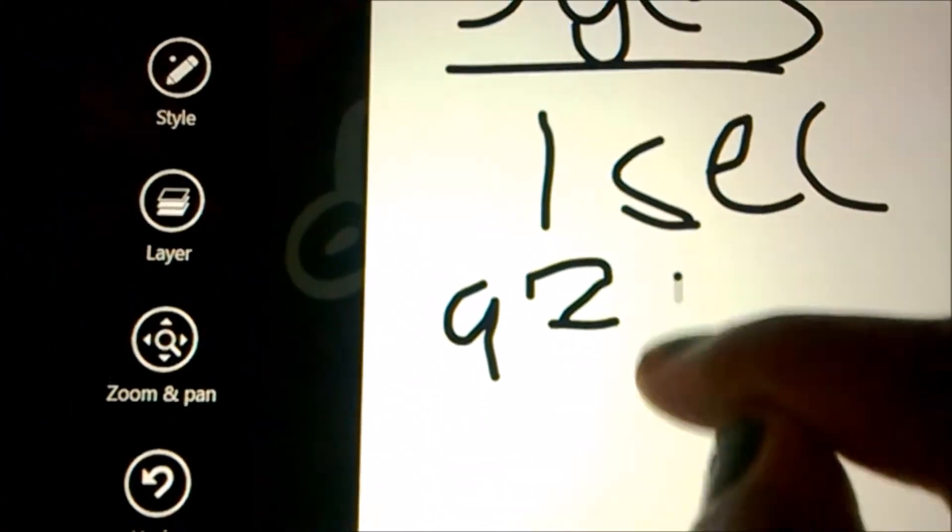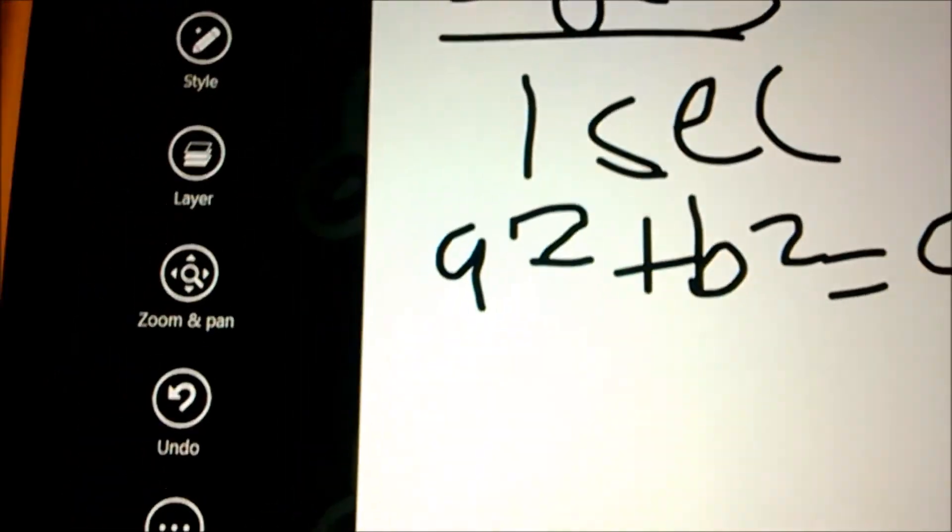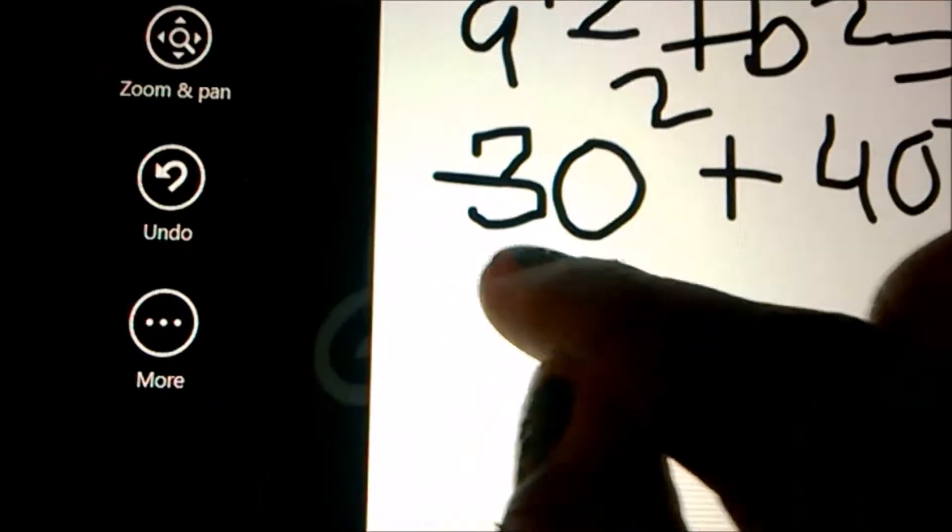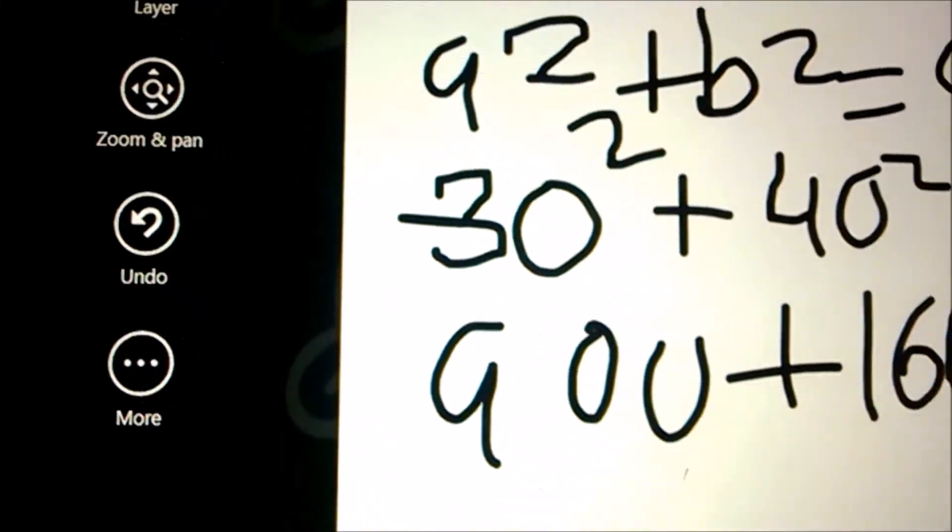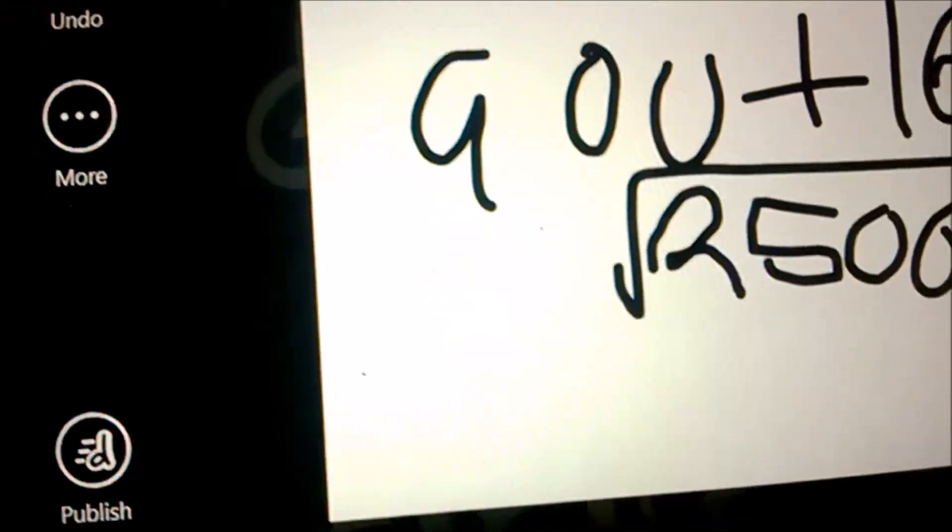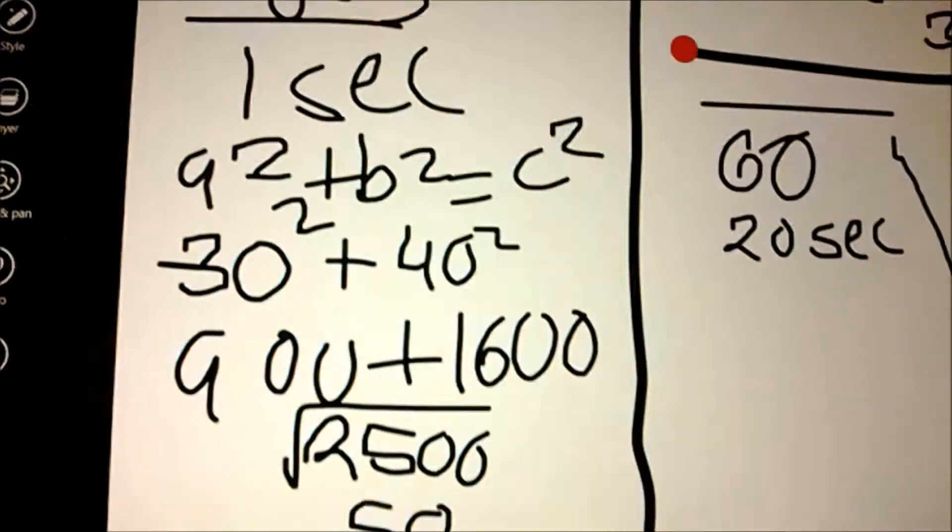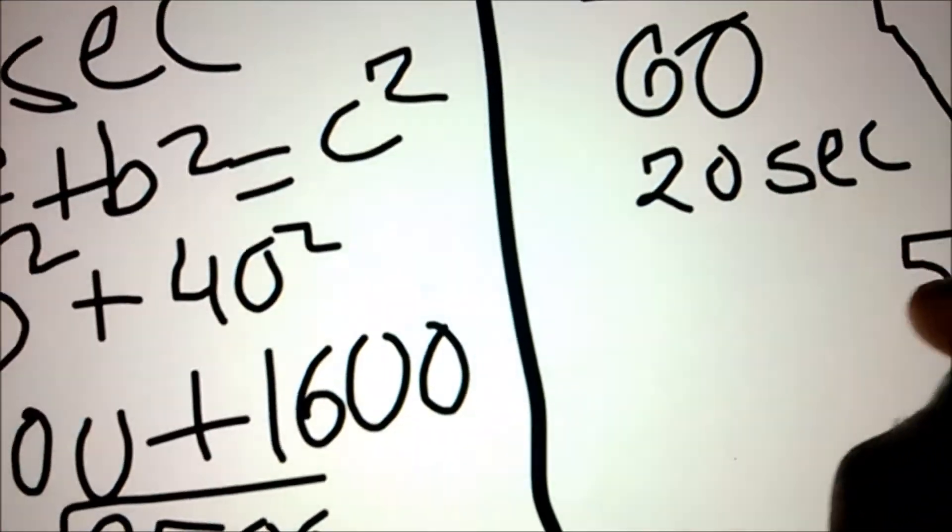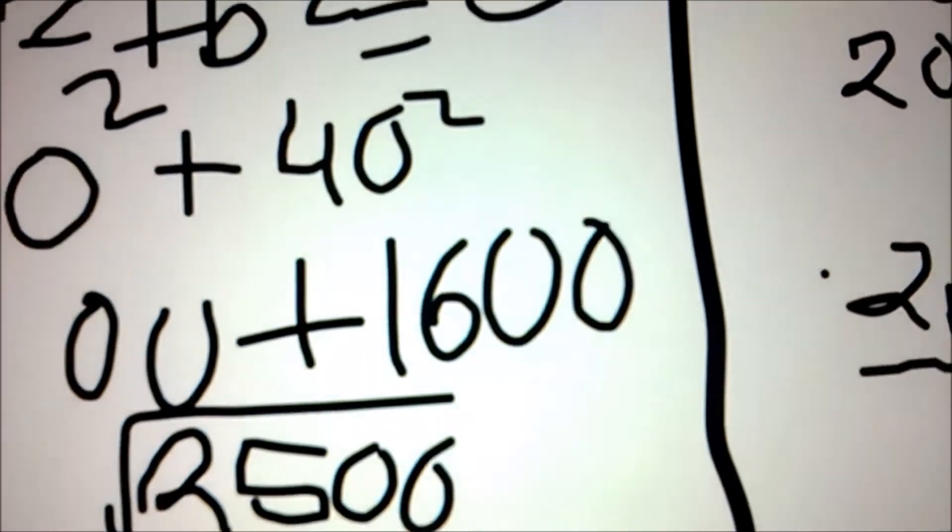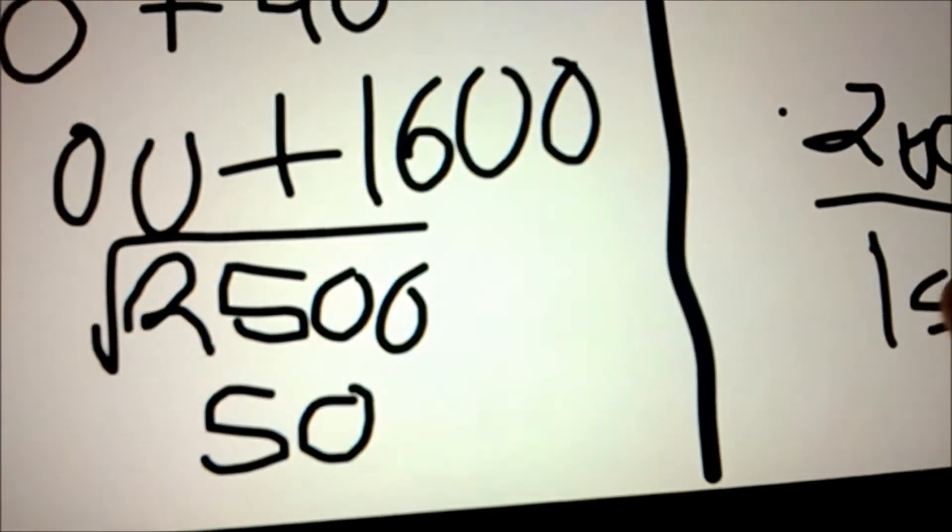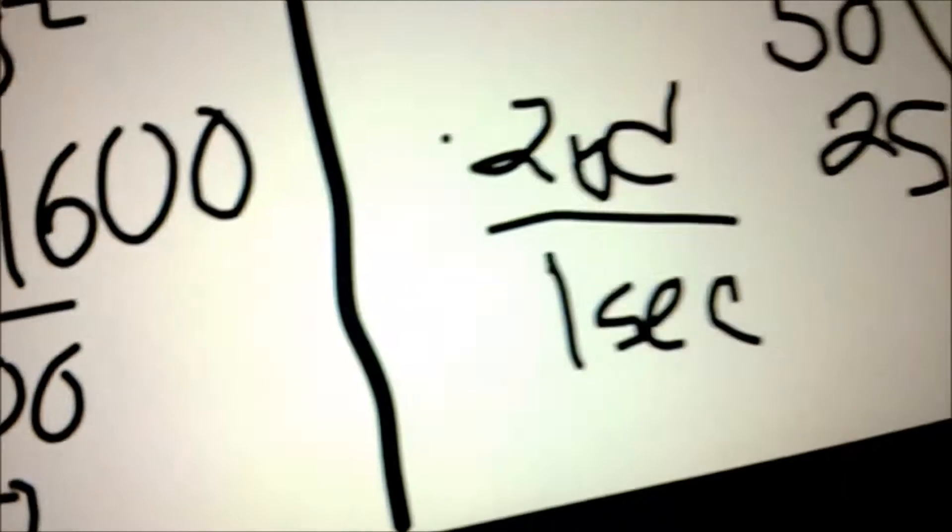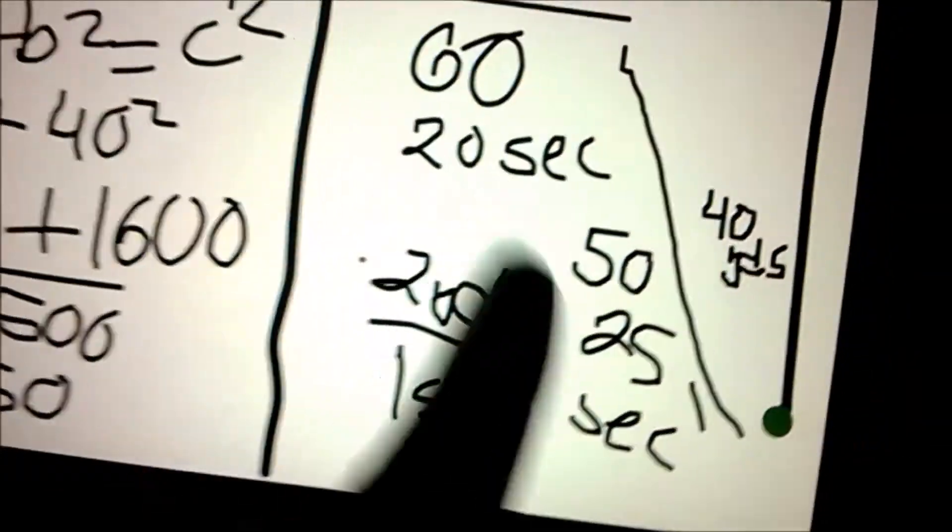So A squared plus B squared equals C squared. A is 30, and B is 40. 900 plus 1,600. And that equals 2,500. And the square root of that is 50. So the distance here is 50 yards. And since she's swimming here, we need to do 2 yards by 25 to get to 50, then 1 second by 25 to get 25 seconds. So it took her 20 seconds here, and then 25 seconds here. 20 plus 25 equals 45. So that took her 45 seconds.